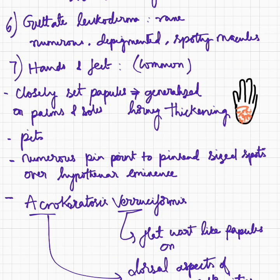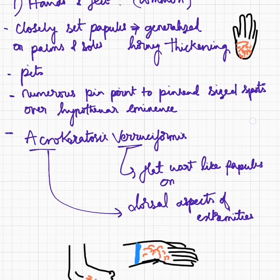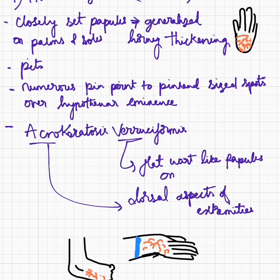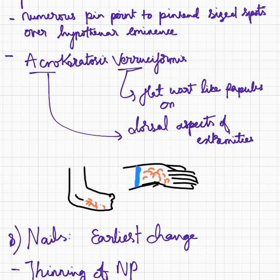Hands and feet are commonly involved; there are papules which are closely set and they appear as generalized horny thickenings. There are pits on the palms and soles, and numerous pinpoint to pinhead-sized spots over the hypothenar eminence can also be seen. There is a variant called acrokeratosis verruciformis, where flat wart-like papules are seen on dorsal aspects of extremities.